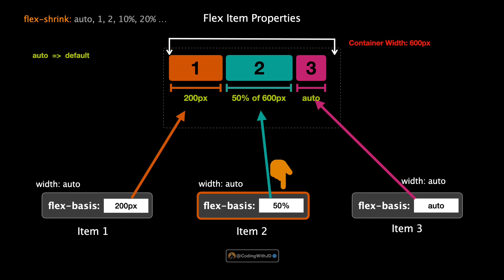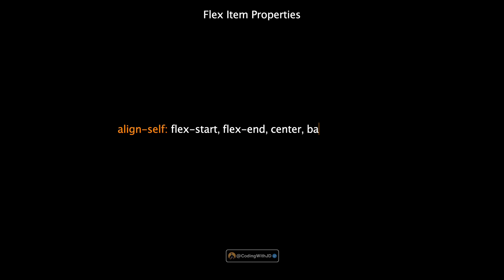Next, let's adjust the flex-basis of the second item to 50%. By setting flex-basis to 50%, the second item now takes up half of the container's total size as its starting point — particularly useful for responsive designs where you want an item to adjust based on the container's size. These adjustments demonstrate how flex-basis gives you control over the starting size of flex items, making it a powerful tool for flexible and responsive layouts.